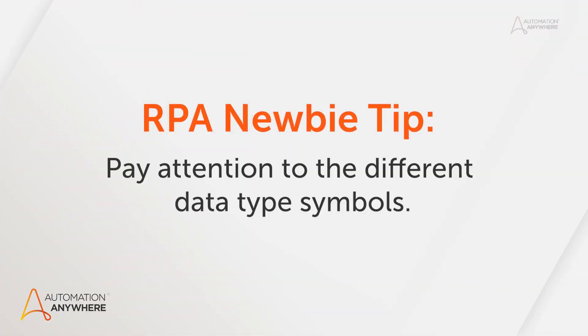One thing I would point out that I really like about the UI is that we now have symbols for those different data types. As you're working with different variables and go to fill them in a field, if you see the two quote marks, you know that one's probably not a number — it's going to be a string. Definitely pay attention to those small visual cues, because they can really help you as you're starting to build out.